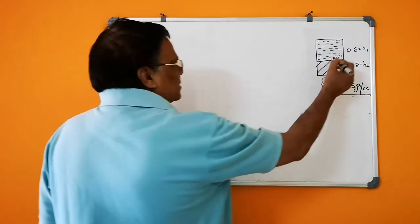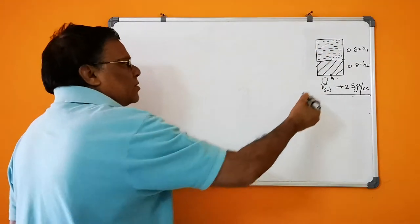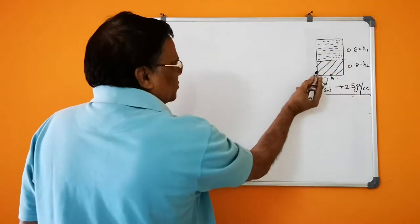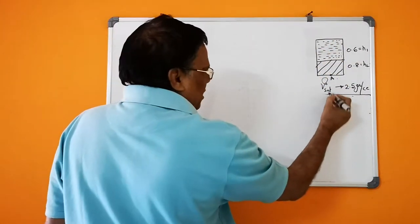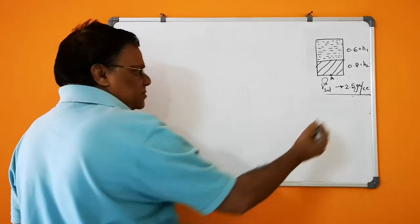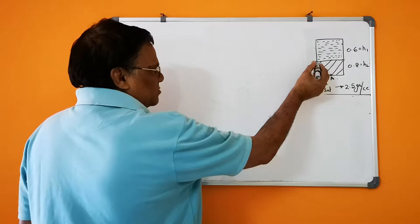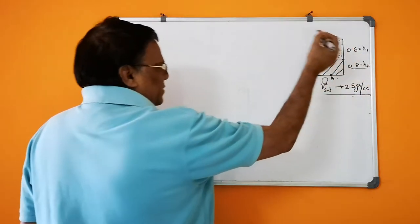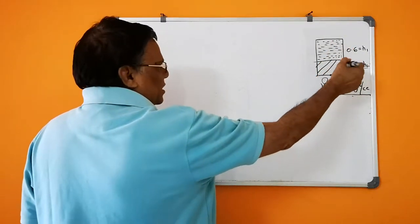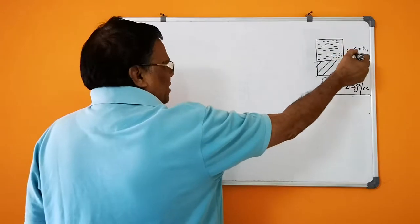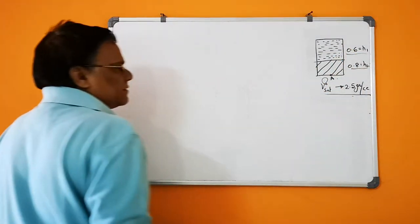This is the problem. There is water above the soil. This soil is saturated, gamma sat is 2.5 grams per cc. The height of this saturated soil is 0.8 meters, and above that there is water at 0.6 meters.